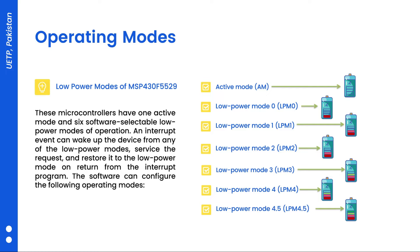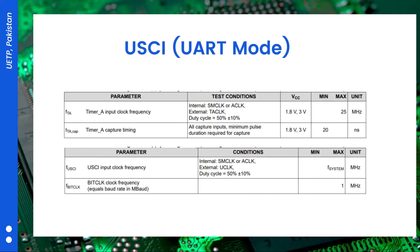These are the basic default configuration of the serial port which we are going to use. It has a timer clock and timer active frequency. The SM clock is the default clock which has a 25 MHz frequency.